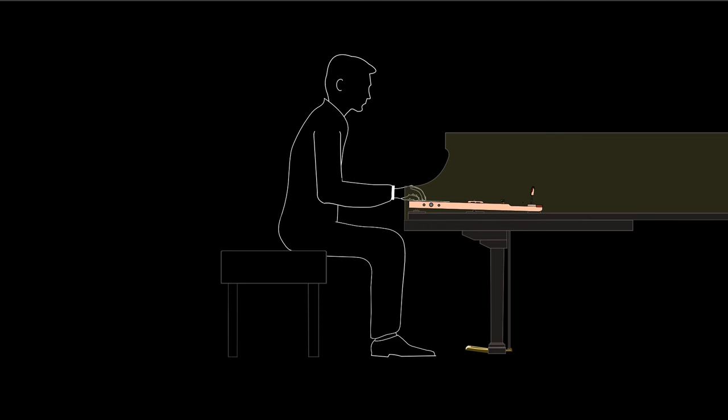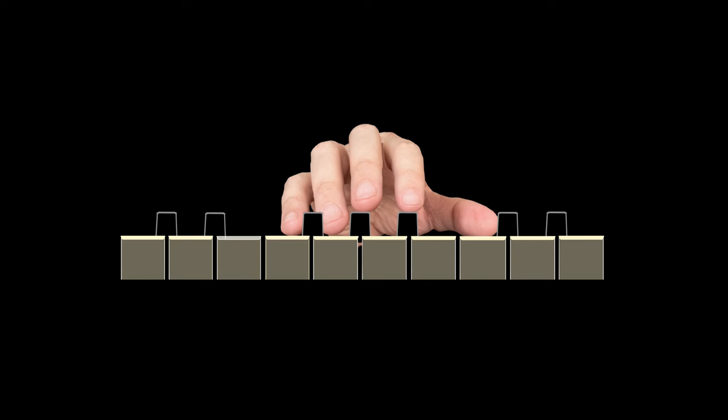The hand is placed on the target keys while the elbow hangs free. The more fingers positioned and sensing their respective keys, the better. At this moment, if asked, the pianist should be able to describe what is happening and what is about to happen with the hand, vis-à-vis the keyboard.